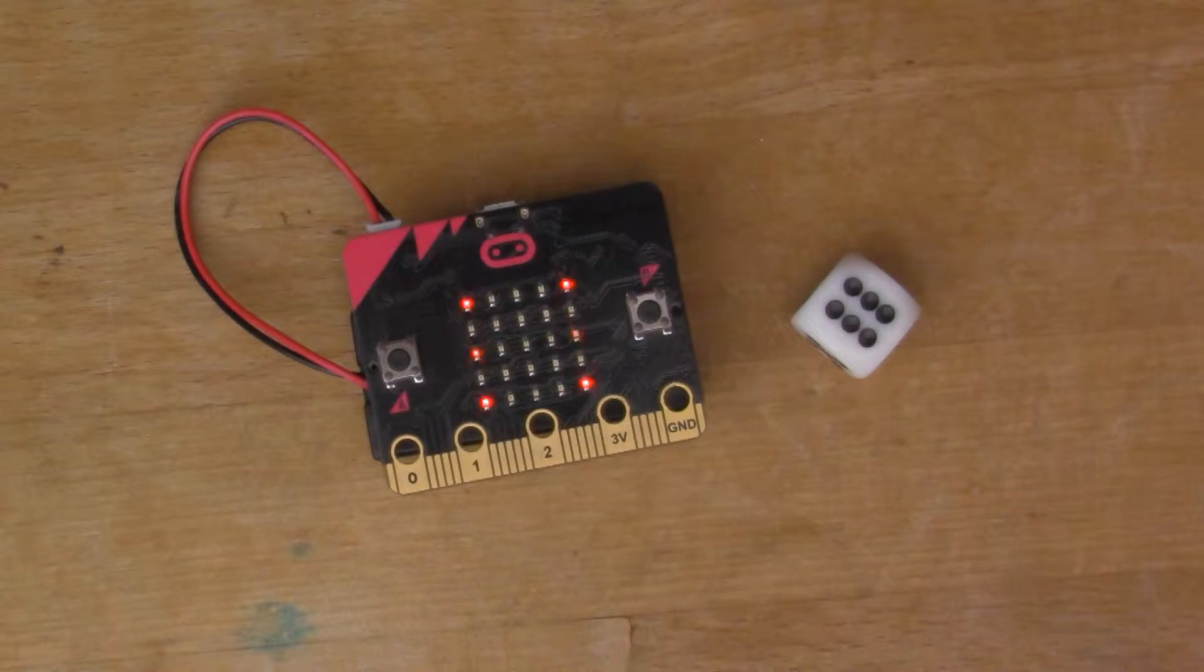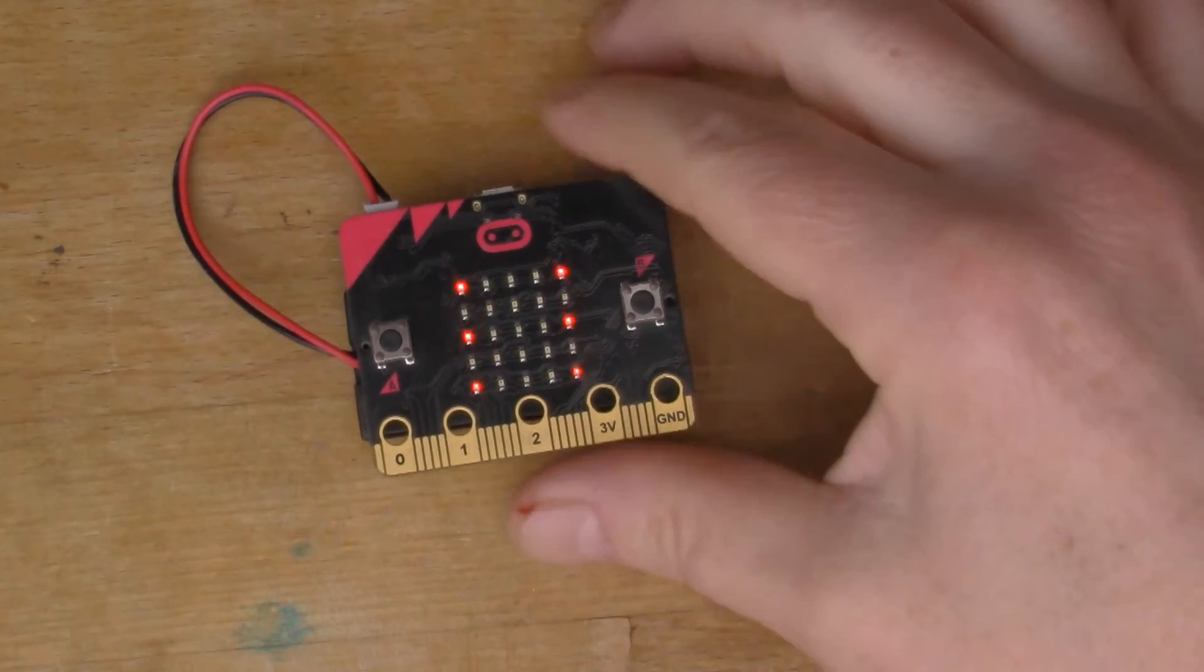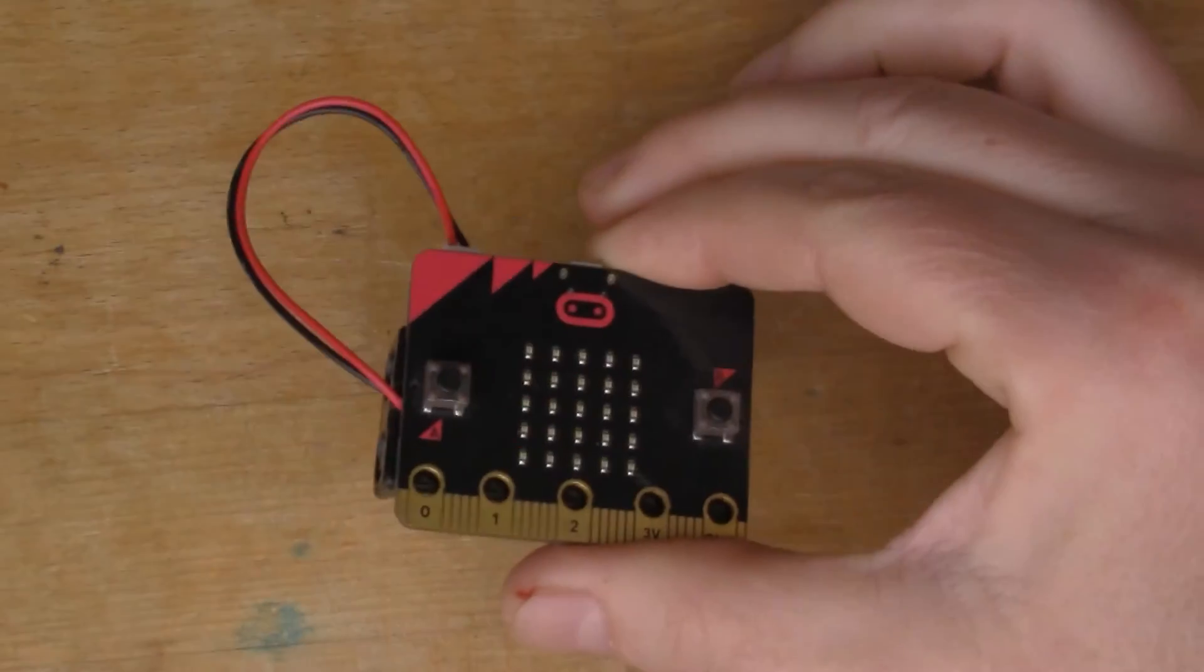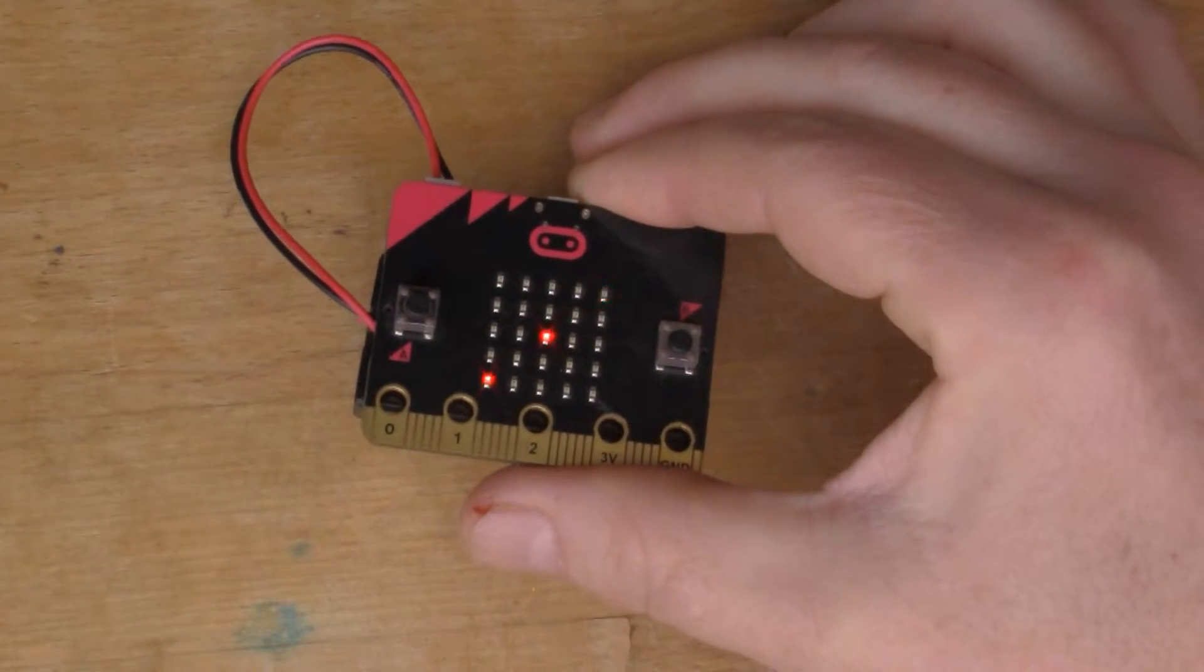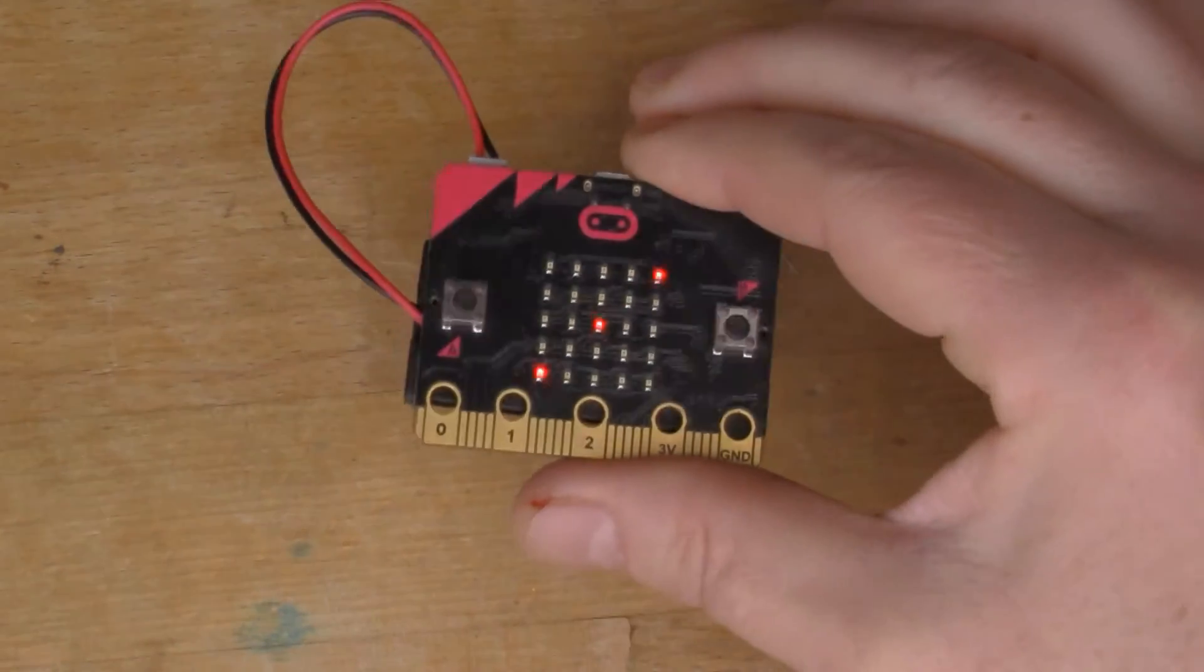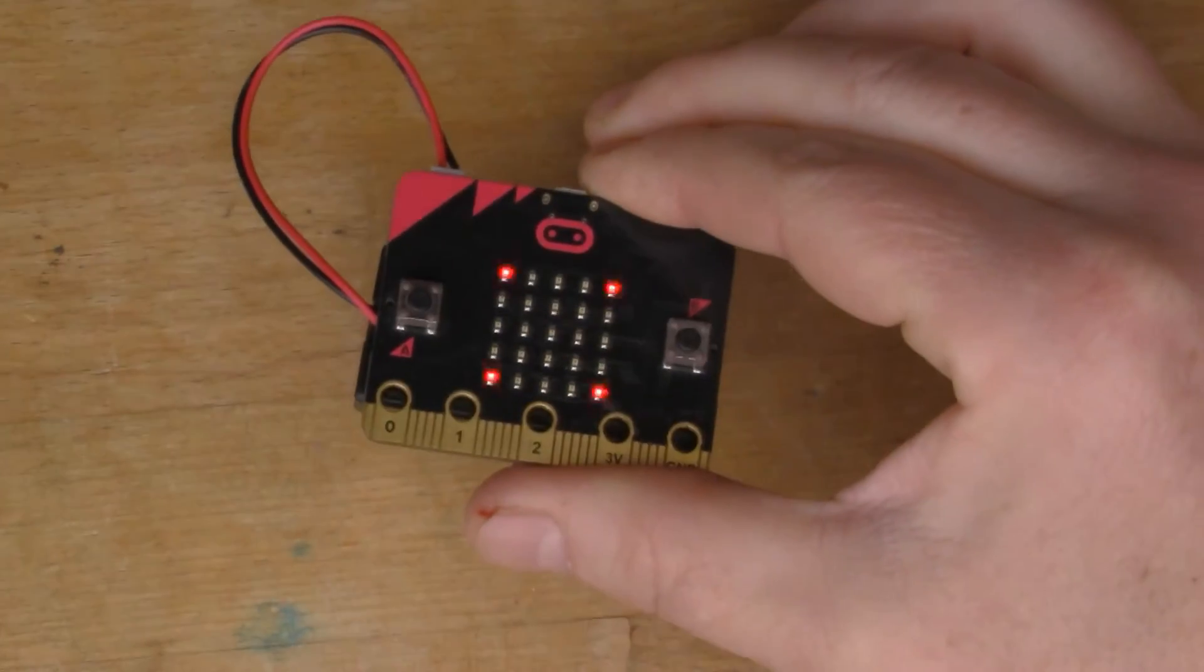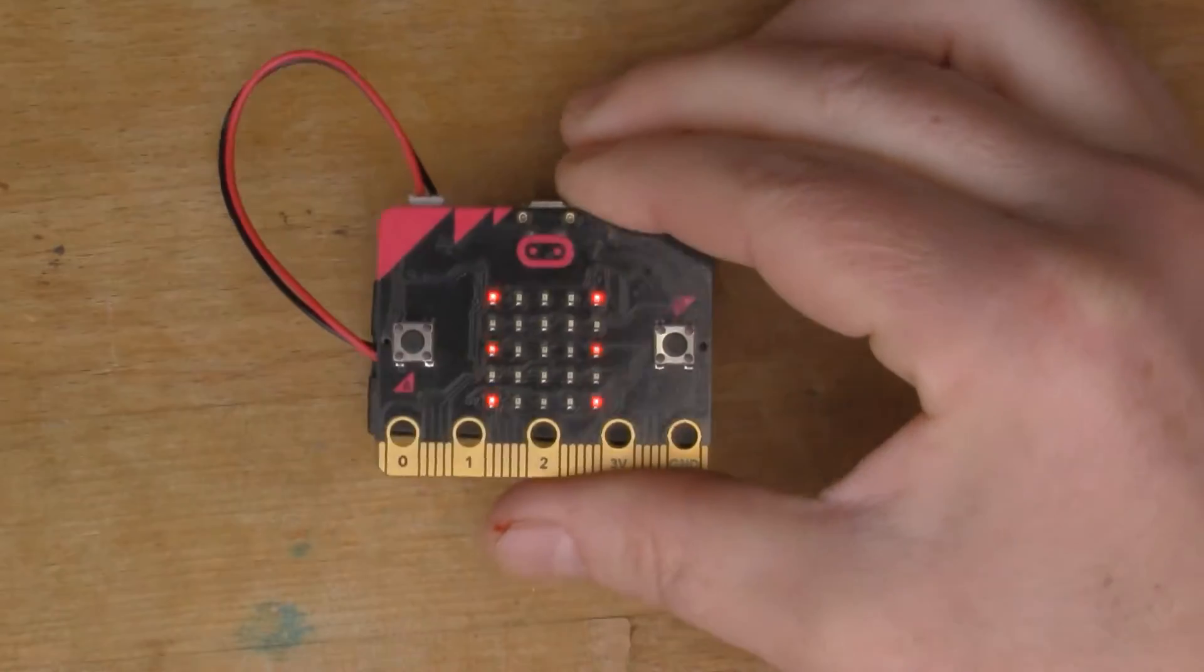Today I decided to use the micro:bit as a die, like shaking dice. If I give it a shake here, you go, it's going through a load of numbers and that finishes on the three. Let me do that again, give it a shake.